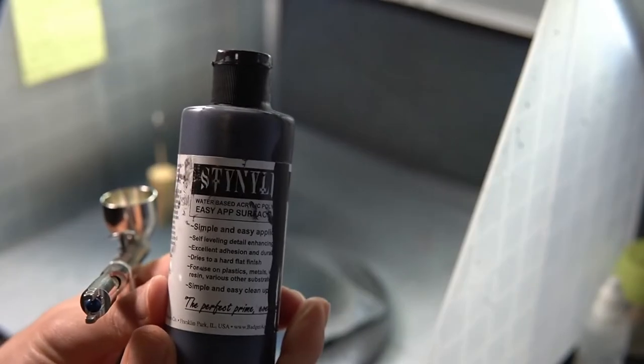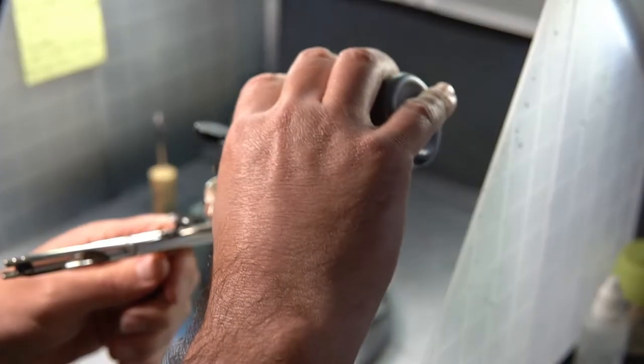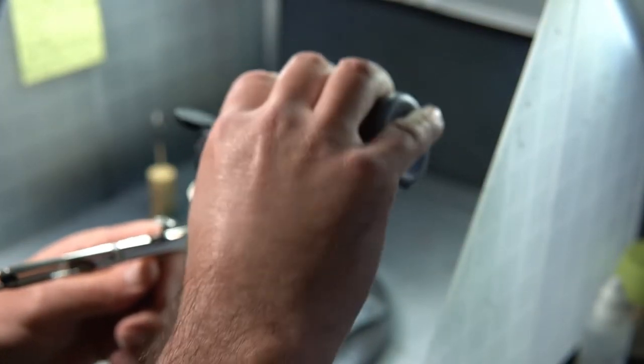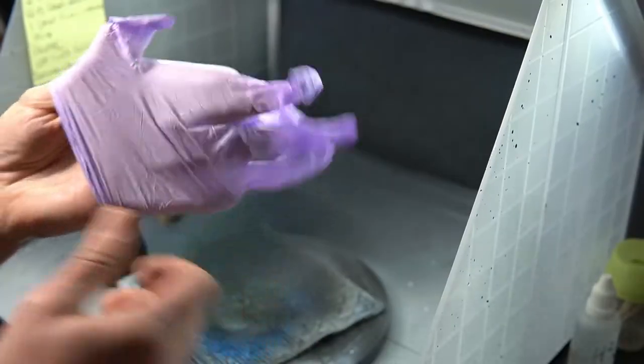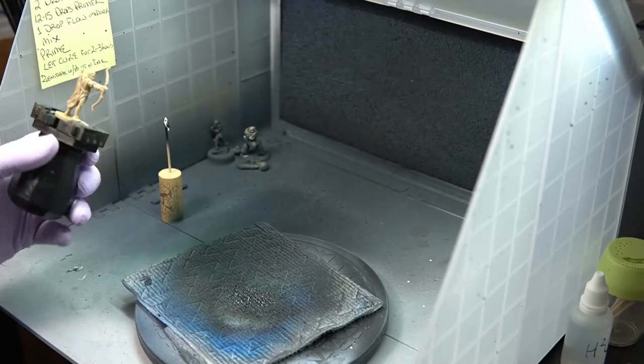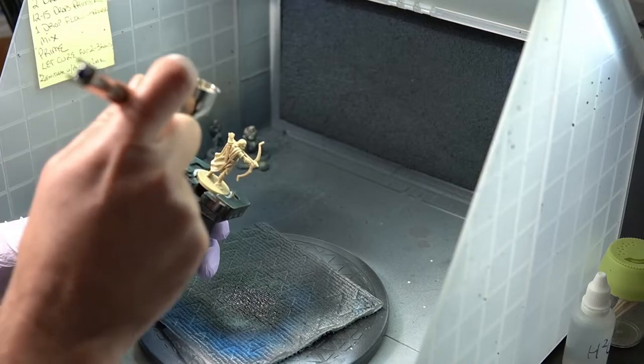And then I grab my primer. I'm using Stynylrez here. It's my favorite primer. The black is what I like to use most often, unless I'm painting something very light, like a yellow or a white or something. But I'm starting with the black. You just pour a little bit in the cup, maybe a third of the way full. I like to put on a little disposable glove just to keep the paint off my hands. I'll spray a little onto my paper, and away we go.